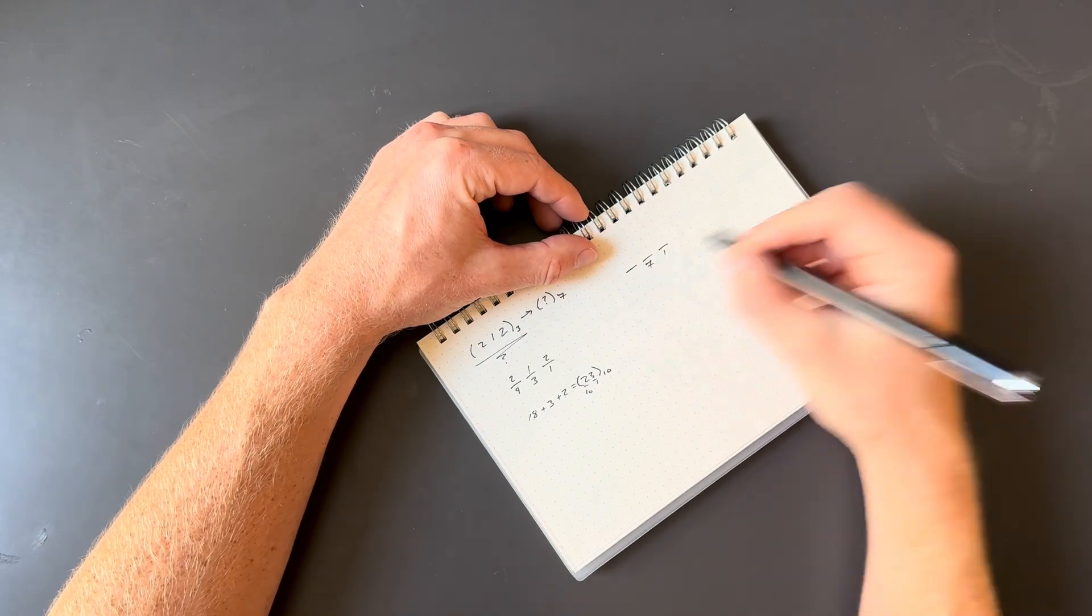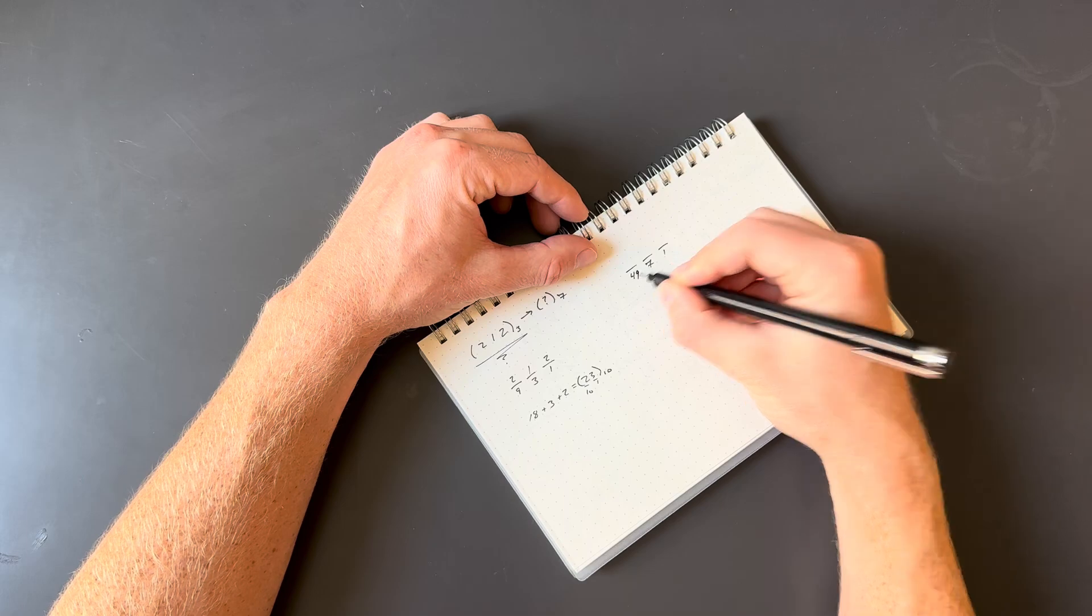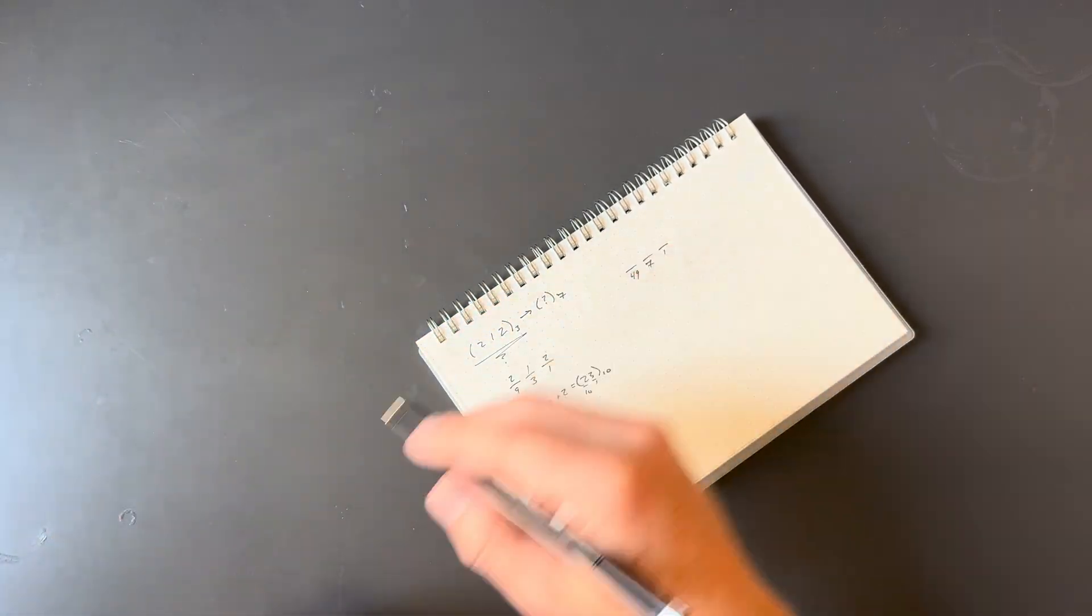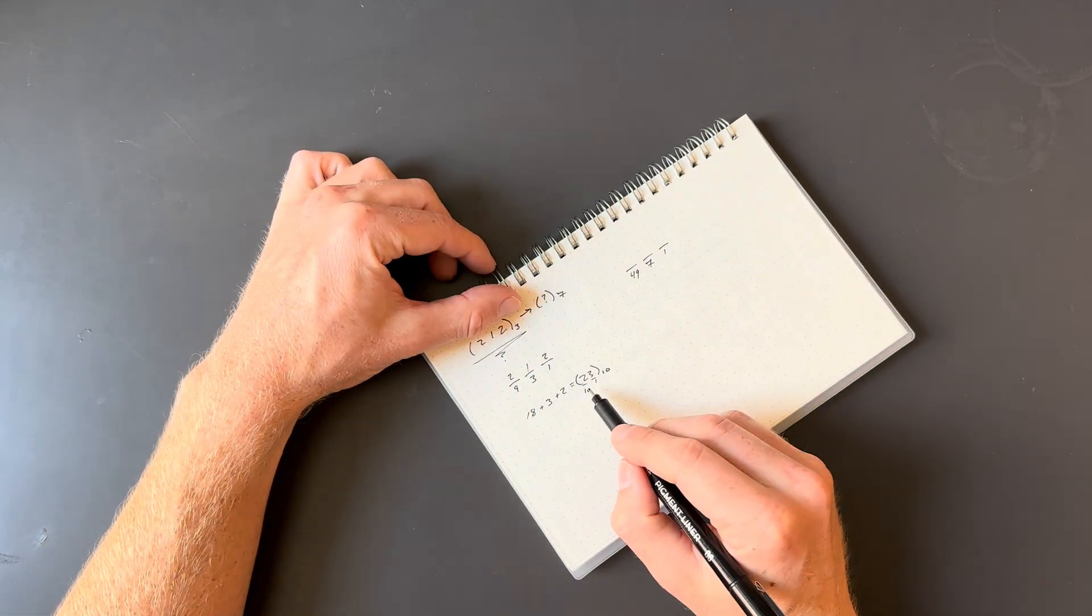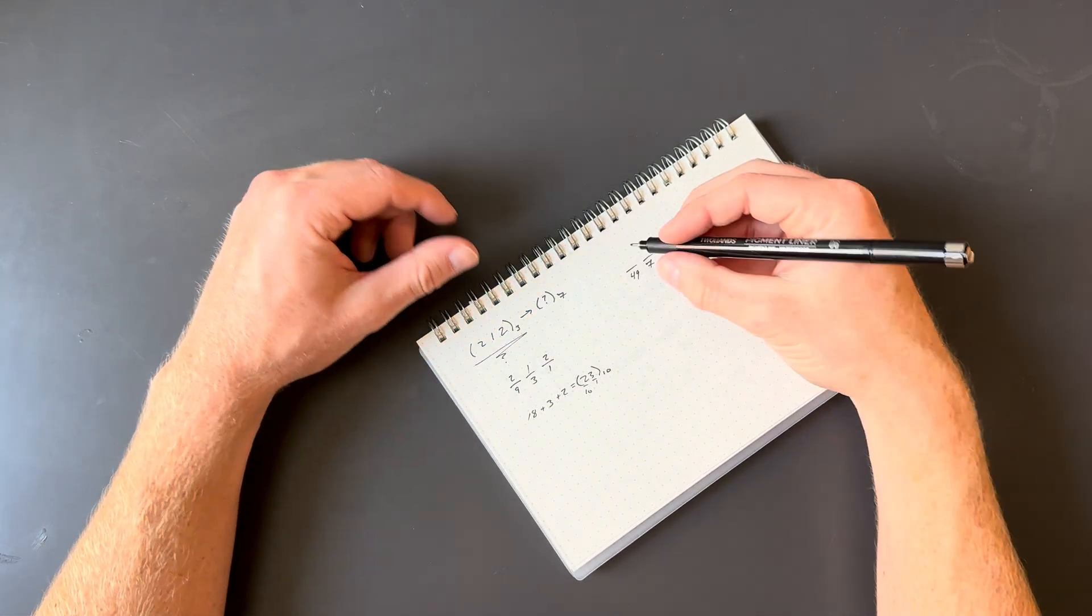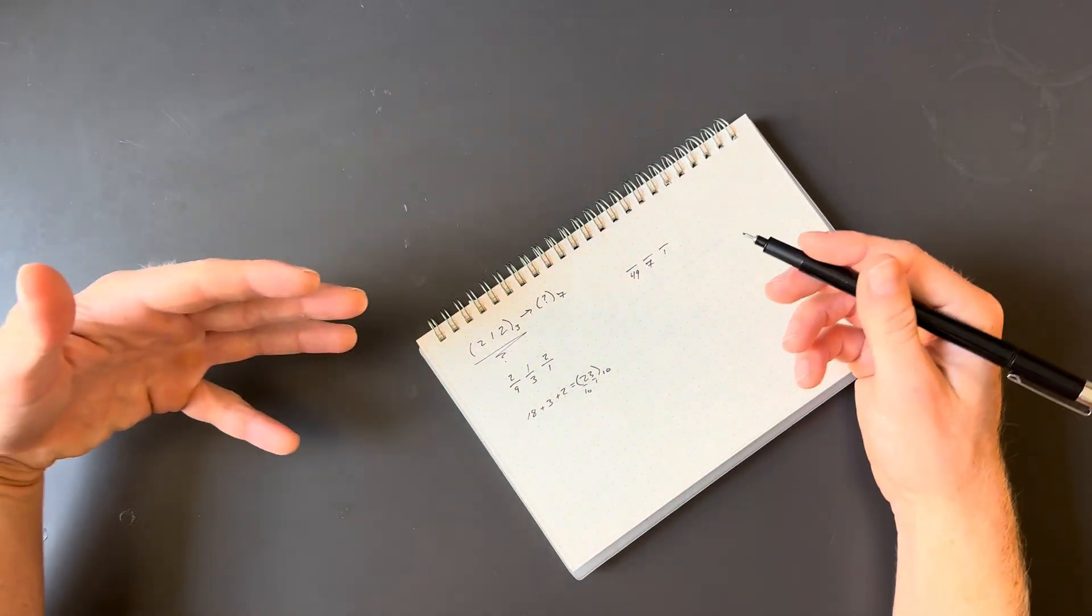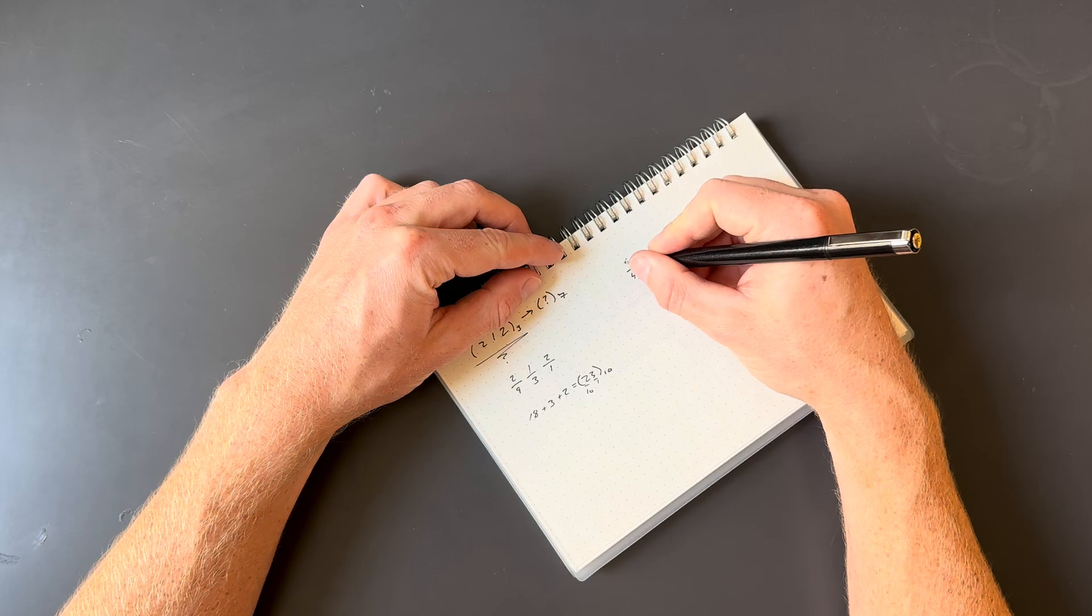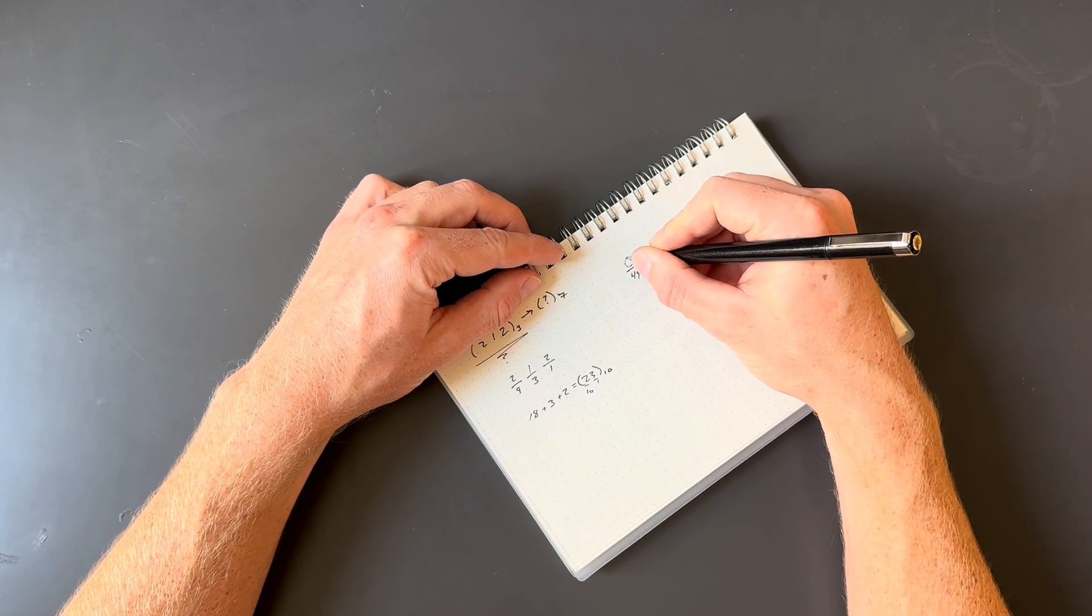And then after that, we would have a 49s place. Because we're just multiplying by 7, since that's our base, every time we go up a place. Now, since the number we're starting with is 23, I know we're not going to use this 49s place. Because putting even a 1 there would immediately overshoot the quantity that we're trying to make. So you could put a 0 there, or you could leave it off altogether. I'll kind of put in a dotted 0.